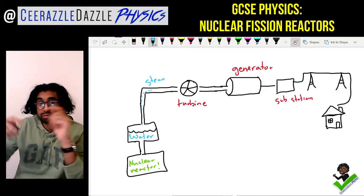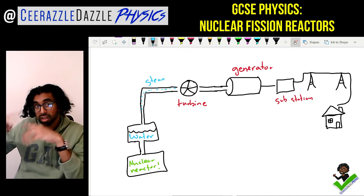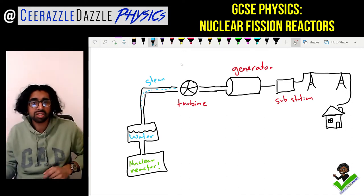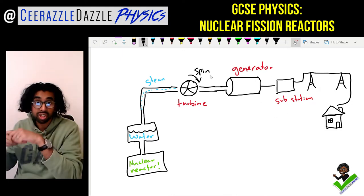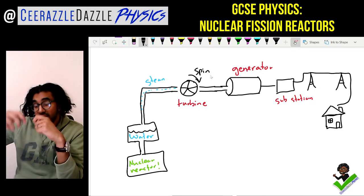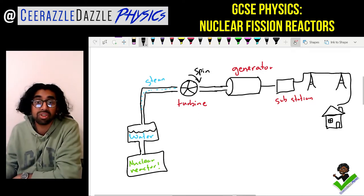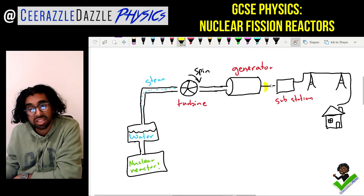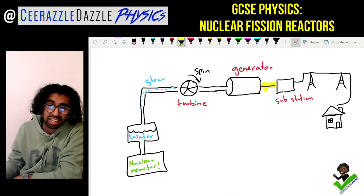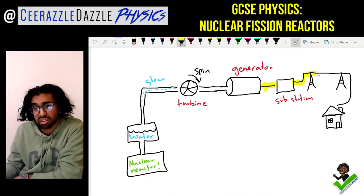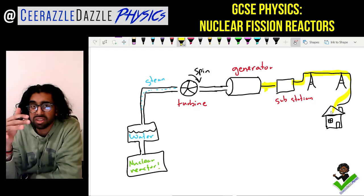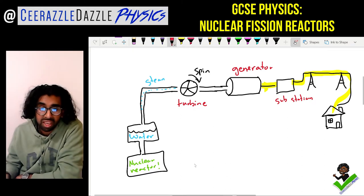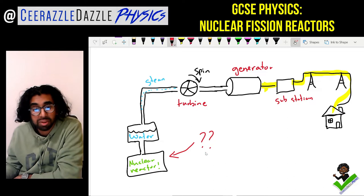That water will then turn into steam, and that steam will travel through and push through the turbine causing it to spin. The turbine is connected to the generator - inside the generator it turns the magnets and electricity is produced. That electricity is then connected to a substation and runs along the national grid all the way into your house. That's the basic principle behind nuclear reactors.